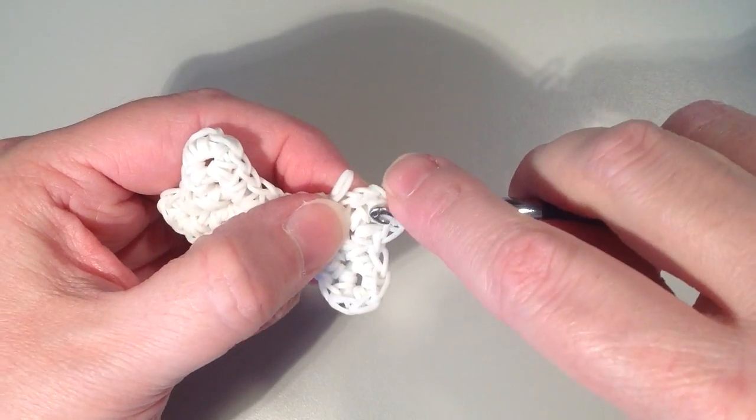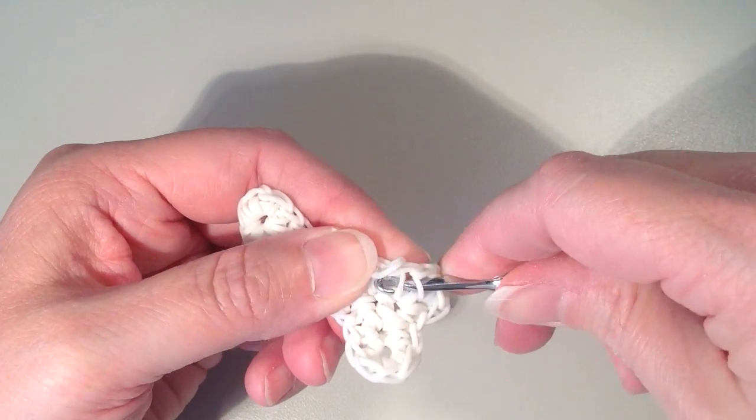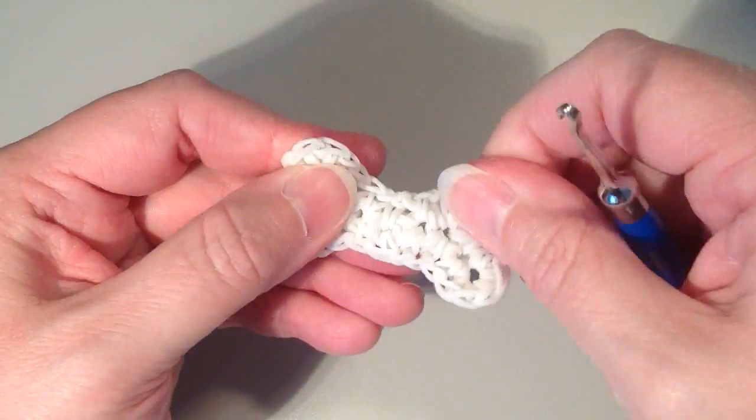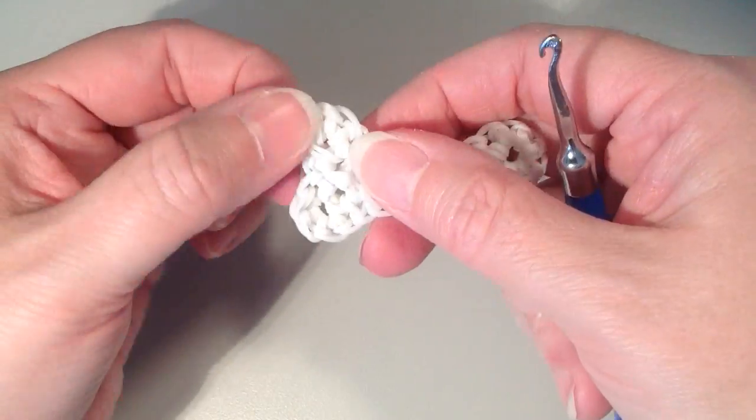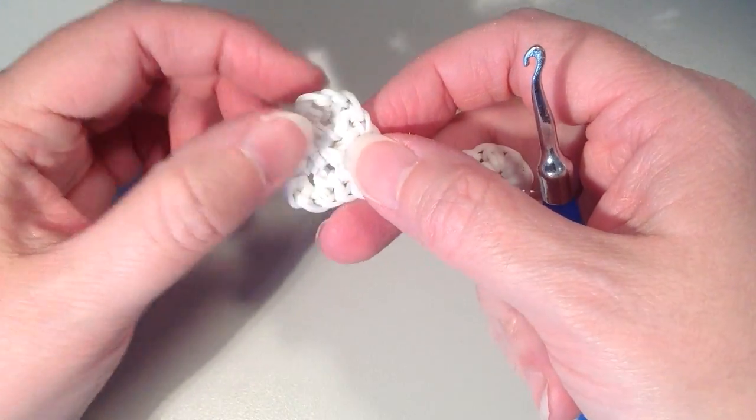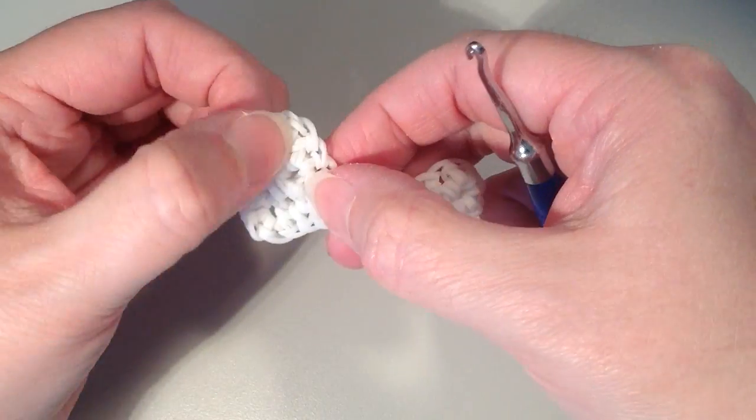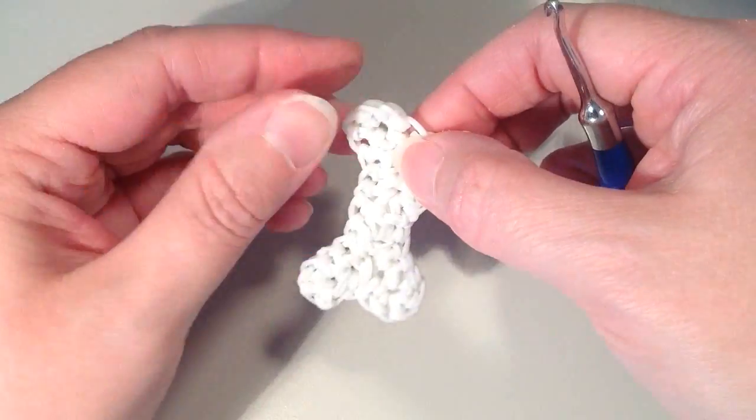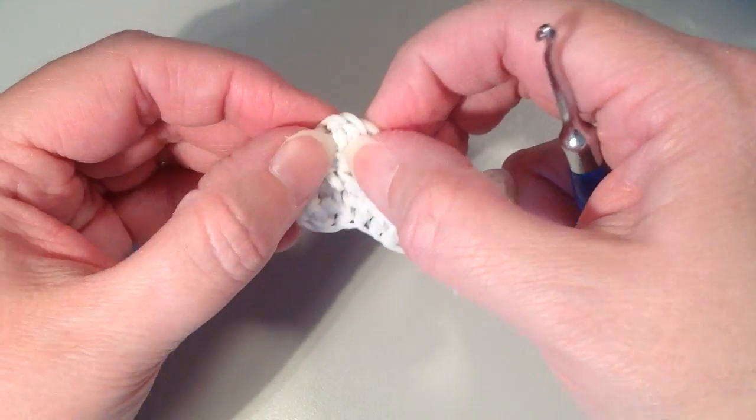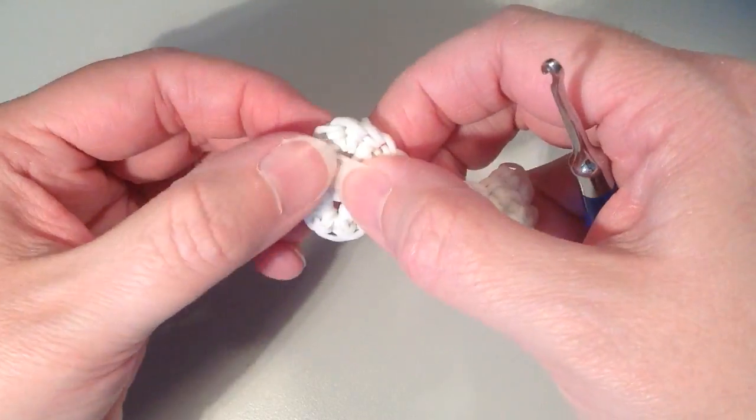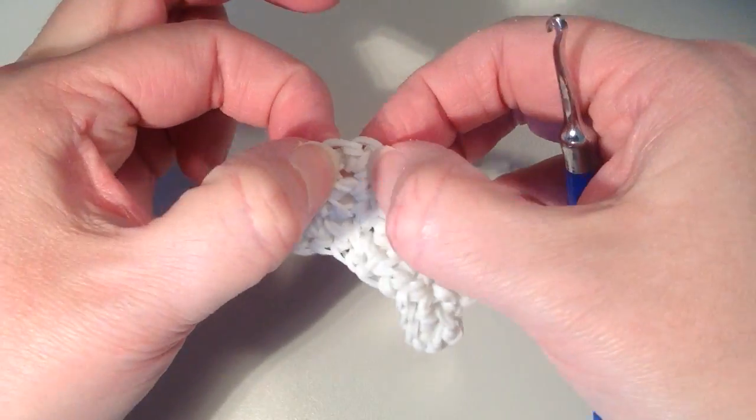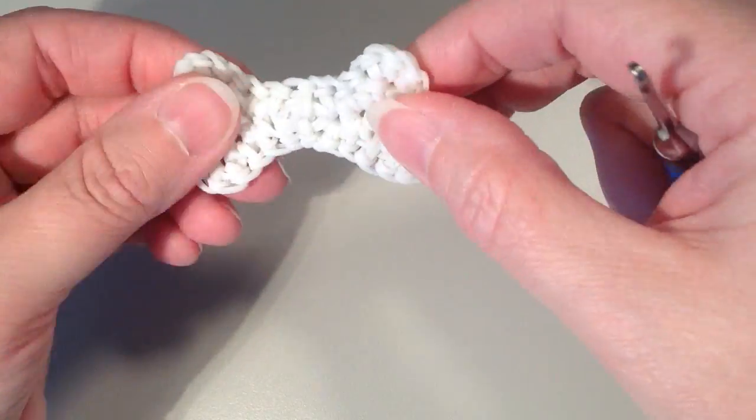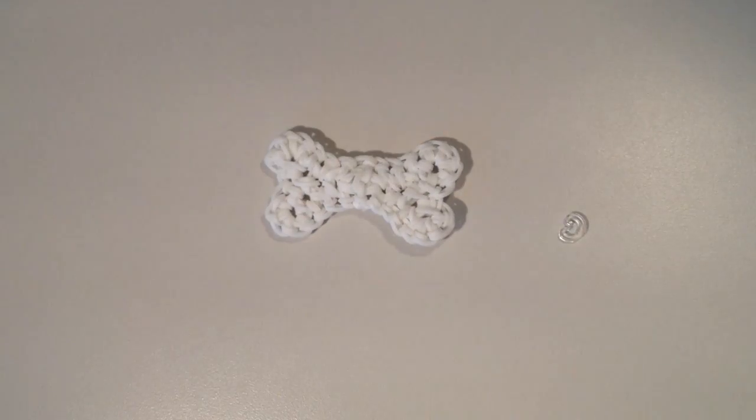And then you can go around and if you feel like it's curved in you can just spread these apart. Make sure that it lays nice and straight. Get the rounded parts nice and round. Sometimes they want to bunch up. If you have the bands laying next to each other it'll spread out that circle. And then your little bone is complete.